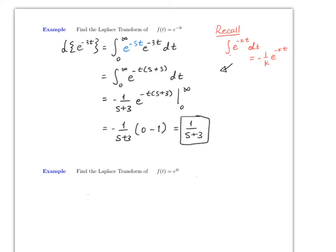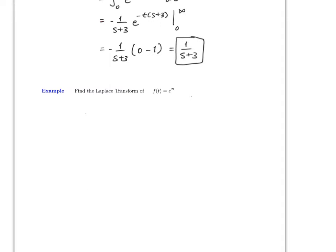Let's try a similar example: the Laplace transform of e^(2t). Following the same technique, we integrate e^(-st) times e^(2t) dt. It's highly recommended to factor out the t, combining to e^(-(s-2)t). The integral becomes (-1/(s-2)) e^(-(s-2)t).